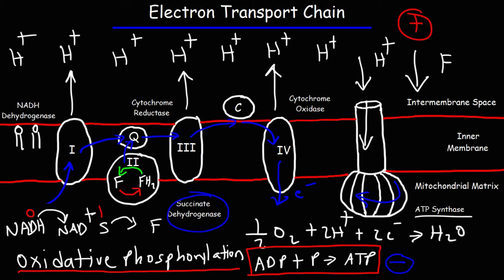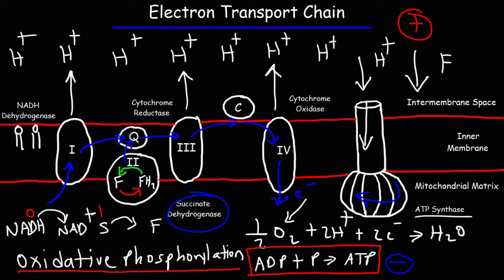There are many electron acceptors in this process. In glycolysis, NAD+ was an electron acceptor — it took electrons as glucose split into pyruvate. FAD served as an electron acceptor when succinate was converted to fumarate. Oxygen is the final electron acceptor. Oxygen is one of the most electronegative elements besides fluorine, and because of that affinity for electrons, oxygen essentially pulls electrons through the electron transport chain to itself — that's the driving force here.